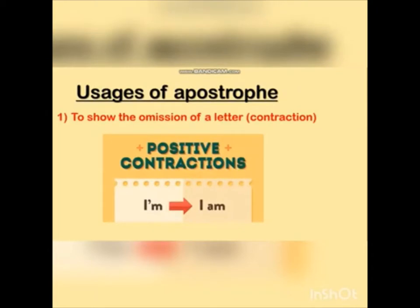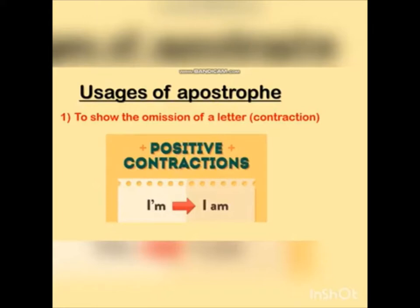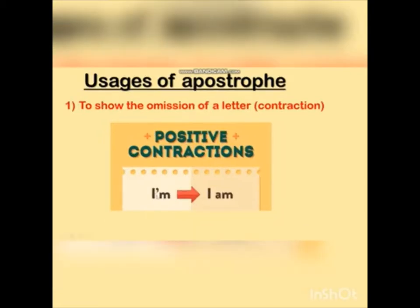The first usage: we use the apostrophe to show the omission of a letter. We call it contraction. Here I have given you an example. This is the positive contraction. 'I am' — we write it in a short way using the apostrophe mark: capital I, apostrophe, M. You omit the letter 'a', and it becomes 'I'm'.